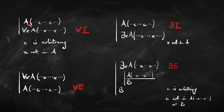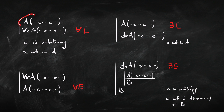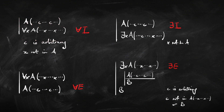Let's first look at the introduction rule for the universal quantifier. The rule basically says: if you want to prove ∀xA, what you've got to do is prove an arbitrary instance of it. So you pick an arbitrary name — a new name — prove what you want to prove for that name, and conclude that it holds for everything, for all x.